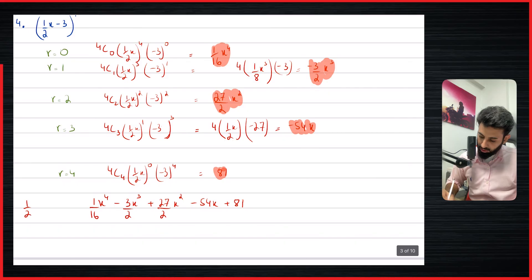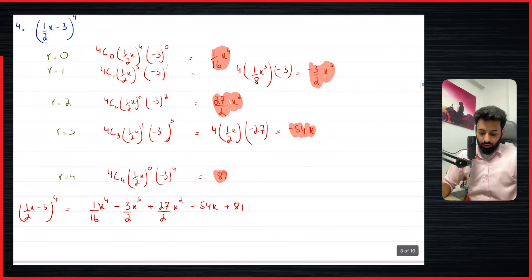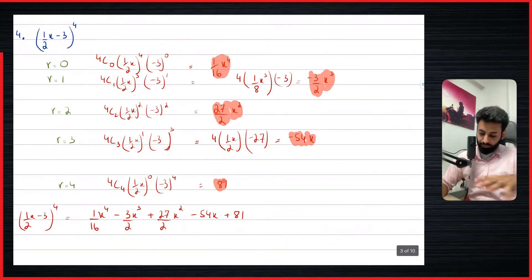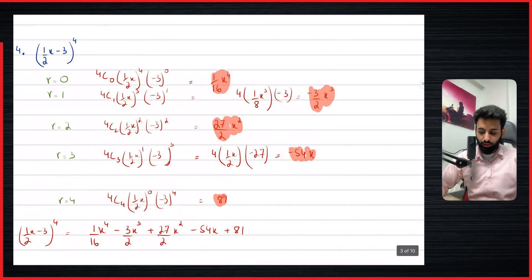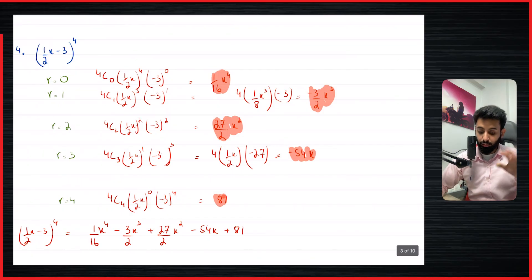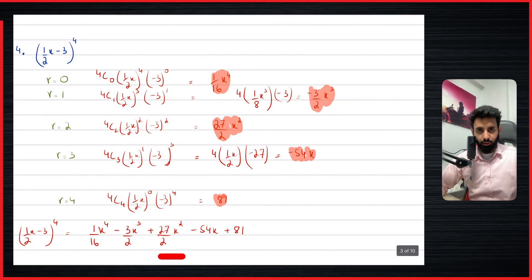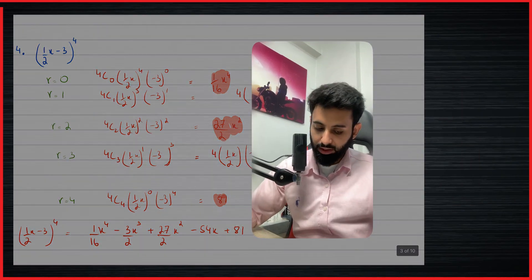And there you go — this is the expansion of half x minus three, the whole thing to the power four. Apologies for getting this a bit messy, but I hope you've understood the concept. So far we should have a good grip on expansion, because that is what we will need to do some more complex questions. Again, observe the value of r and the power on x, because this pattern is necessary to understand a concept I'll explain in later videos. That's it for this video — see you guys in the next one. Take care, bye bye.